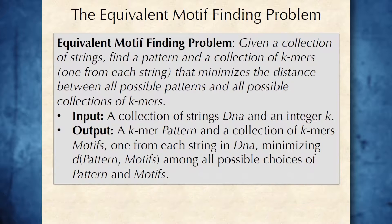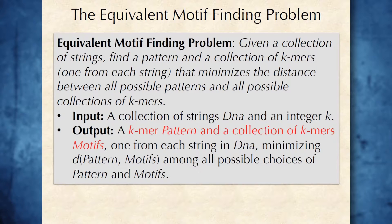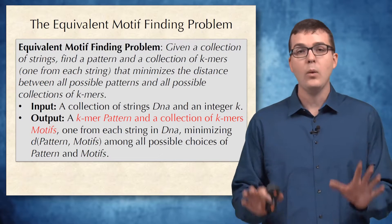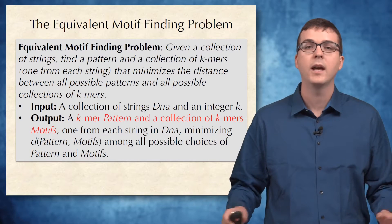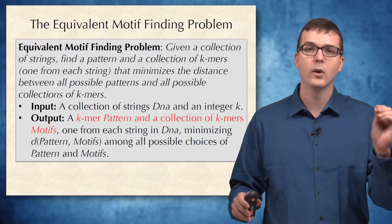This discussion leads us to the equivalent motif-finding problem, in which we are looking for a pattern that will serve as our consensus string — a pattern that minimizes the distance to motifs over all choices of motifs in the underlying strings. It may still seem that we have not made our work any easier, since we are now looking for a pattern in addition to a collection of motifs. However, we will see in the next section that we don't need to search through every possible choice of motifs in order to find an optimal consensus string.